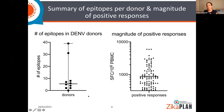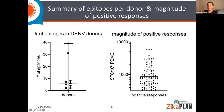If you look at the overall results, this is the summary of epitopes per donor and the magnitude of positive responses identified. It is quite remarkable: out of all the donors we tested, on average every donor recognizes five different areas of the Zika virus, even though these people have never seen Zika virus. Certain donors recognize close to 40, but that's the exception. Every donor sees about five regions of the Zika virus without having seen the virus itself.